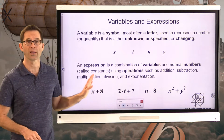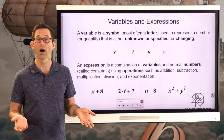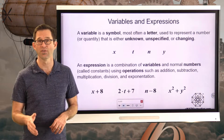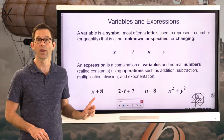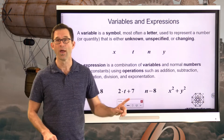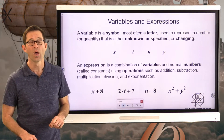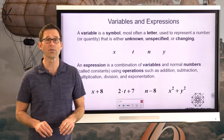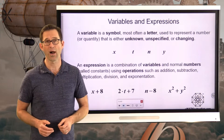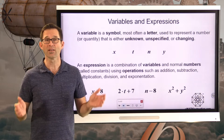An expression is a combination of variables and normal numbers called constants, using operations like addition, subtraction, multiplication, division, and exponentiation. So like X plus 8, or 2T plus 7, or N minus 8, or X squared plus Y squared — all of those are expressions because they aren't just a single variable; they're a variable that has some kind of calculation involved in it.